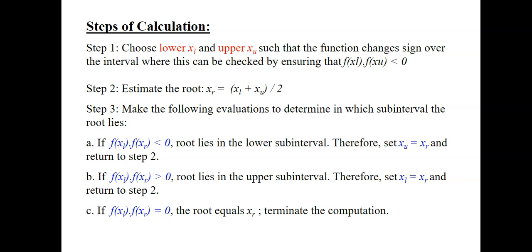First things first, if these values are not given to you, you need to choose your xl and xu such that f(xl) times f(xu) gives a negative value. The function changes sign over the interval. If you are getting a positive value which is more than zero, you need to choose another value of either xl or xu until you get f(xl) times f(xu) less than zero. Please remember it's f(xl) times f(xu), not xl times xr or xu times xr.